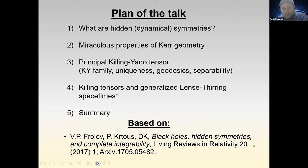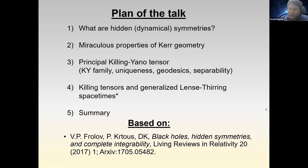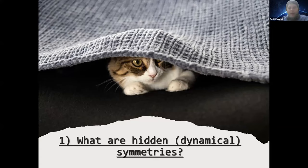My talk is based on this now six-year-old Living Review in Relativity, but I will mention some more recent results as we proceed. So what are hidden symmetries or dynamical symmetries?